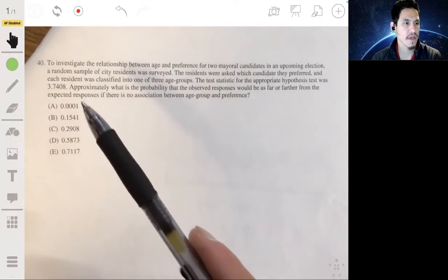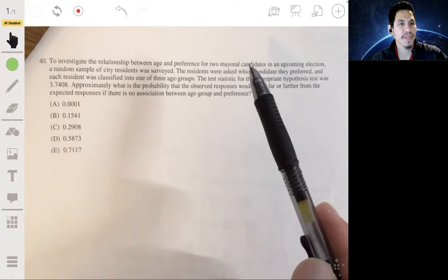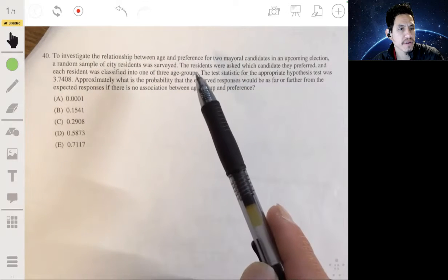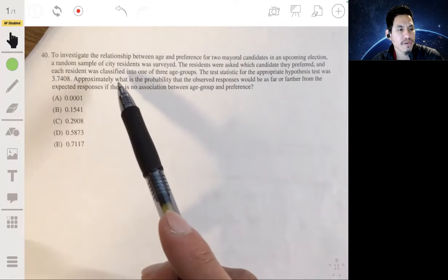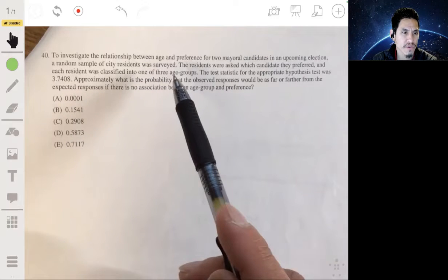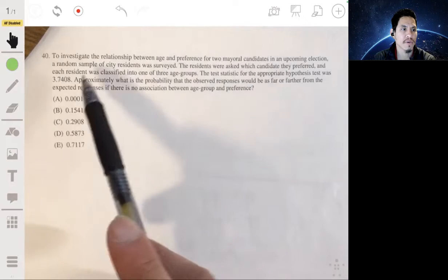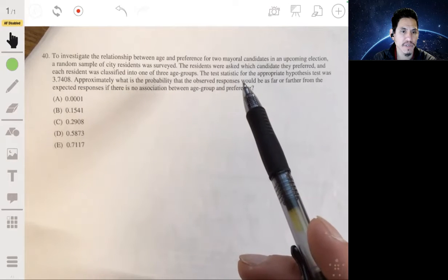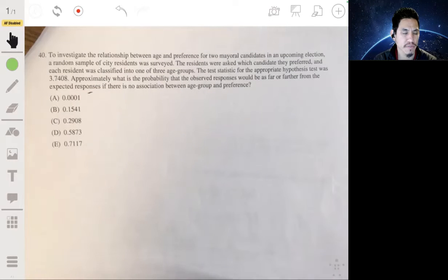All right. Final multiple choice. To investigate the relationship between age and preference for two mayoral candidates in an upcoming election, a random sample of city residents was surveyed. The residents were asked which candidates they preferred, and each resident was classified into one of three age groups. The test statistic for the appropriate hypothesis test was 3.7408. Approximately, what is the probability that the observed responses would be as far or farther from the expected responses if there is no association between age group and preference?